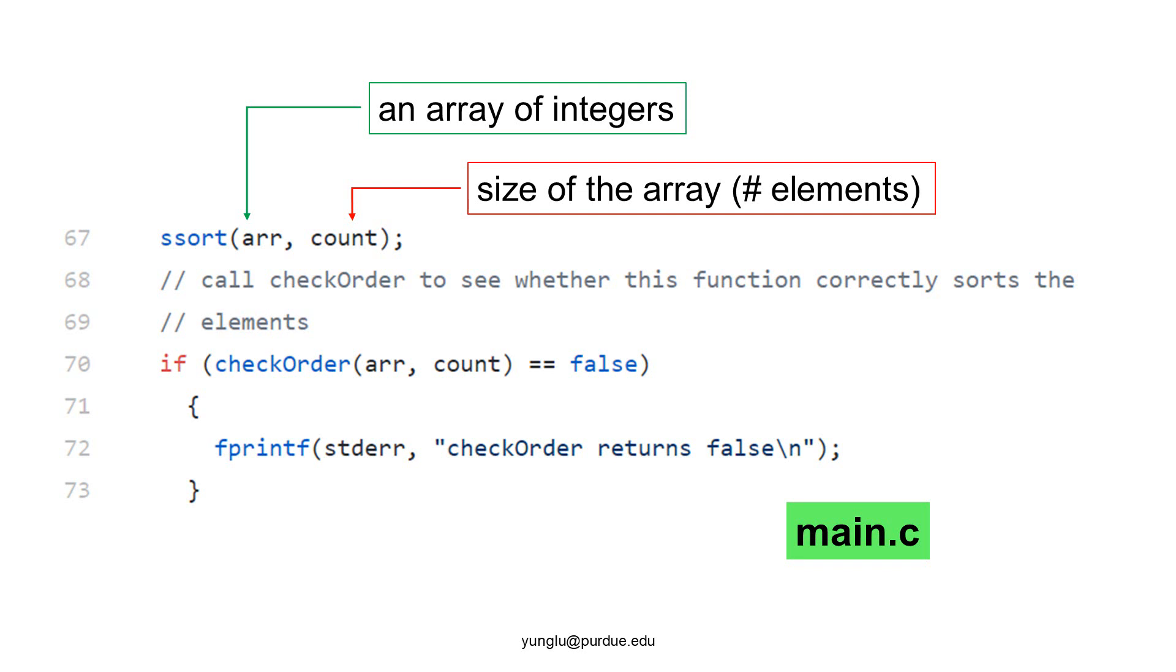The main function calls another function, checkOrder, to check whether the array is in ascending order. If the array is not in ascending order, an error message is printed.